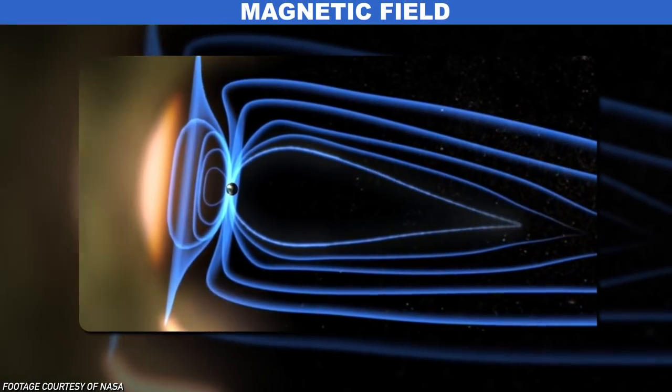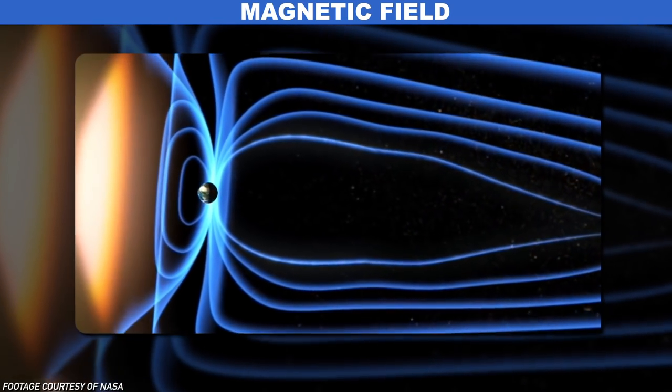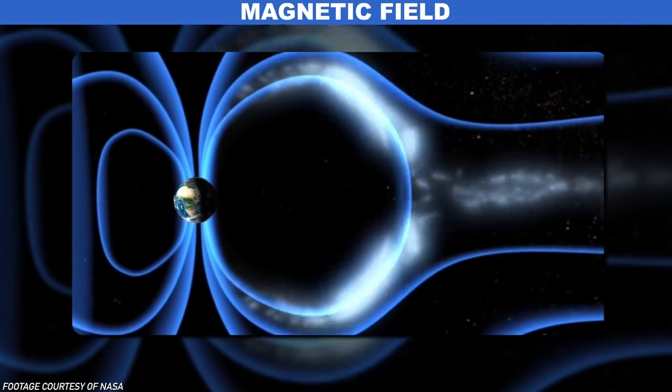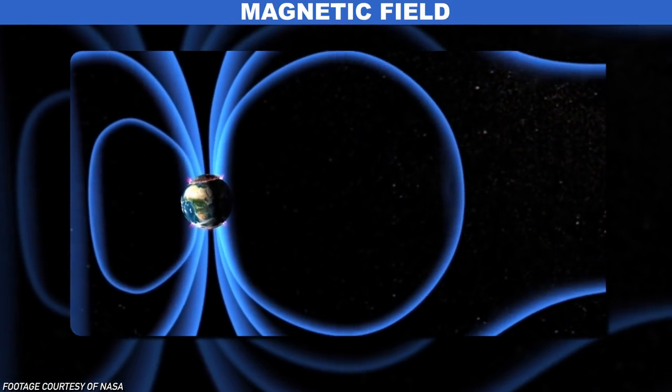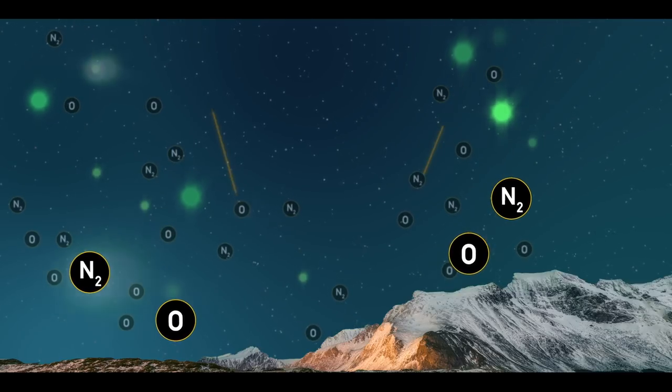Our magnetic field redirects most of these protons and electrons around us, but some follow through the Earth's magnetic field lines to their source, the magnetic poles. On their way to the poles, those charged particles crash into atoms and molecules in our upper atmosphere, producing this.